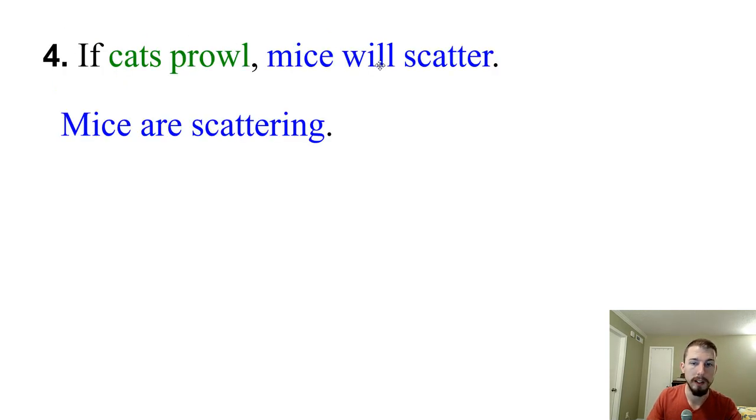If cats prowl, then the mice will scatter. Then they tell us that the mice are scattering. So can we conclude that it was the cats that made them scatter? So we got to be careful here. So we have p implies q, and then they tell us that q happens. Can we therefore say that p must have been the cause? No, the reason we can't is because this is not a biconditional statement. If this said cats prowl if and only if mice are scattering, then we could go both directions. But because it's not biconditional, we cannot conclude that if the mice are scattering, that must mean that it was the cats that did the prowling. It could have been the dog chasing the mice, could have been me chasing the mice.